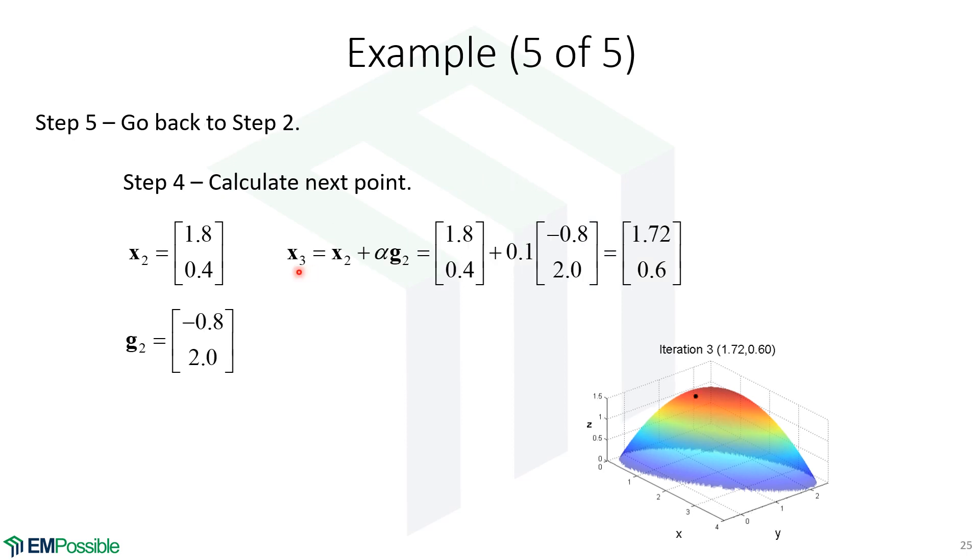So now we calculate our third point as our second point plus alpha times the gradient at the second point. And we do our math. And this is our point. And the plot, I'm showing it right here. So we're getting closer.